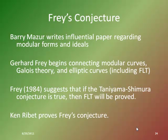Ken Ribet comes along, and he doesn't exactly prove that the Taniyama-Shimura conjecture is correct. He does prove that if Frey is right, then we would have a solution to Fermat's Last Theorem. Ribet connects Frey's disjointed theorem to the rest of the chain, and he is able to prove that in ways that are far beyond what I'm able to demonstrate right now.